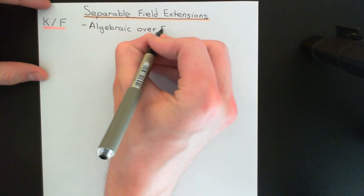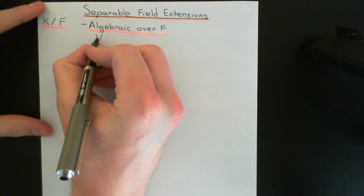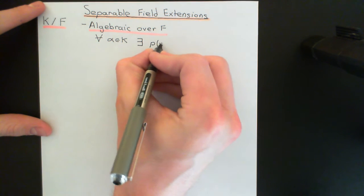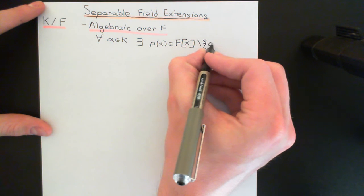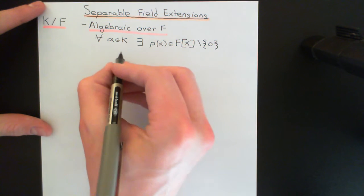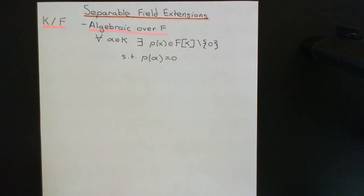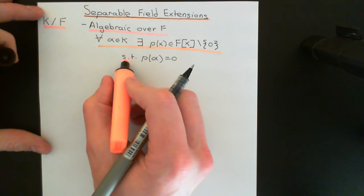Remember what being an algebraic field extension actually means from earlier videos in the playlist. It means that all elements of that larger field, capital K, must have some non-zero polynomial in the ring of polynomials over the initial field, capital F, for which they are the roots. Writing this down: for all alpha in the larger field K, there must exist some polynomial P(X) which is an element of the ring of polynomials over the initial field F, and it cannot be the zero polynomial, such that alpha is a root of this polynomial — P(alpha) equals zero.